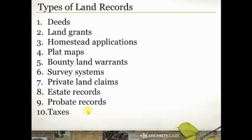Some record types overlap, but this is just to broaden your ideas about where you might find information about property owned by your ancestor — the transfer of that property, how they acquired it. Remember, you're trying to tie people to a place in time, establish kinship connections, sort out people of similar names, and learn more about the geography.